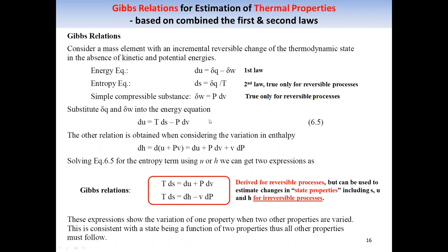The second form of the Gibbs relation starts with the definition of enthalpy. If we replace dU in the enthalpy expression, we get this second expression. If we group them together and put them in the red box, it's shown here. Notice both equations have ds on the left-hand side, so they will be the starting point for the estimation of entropy changes.